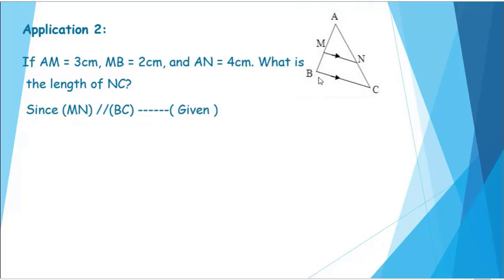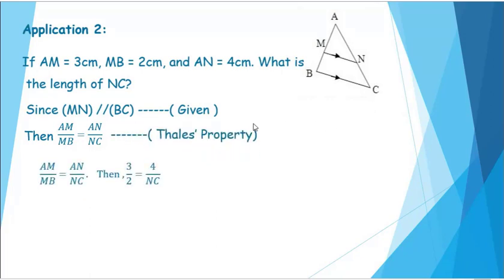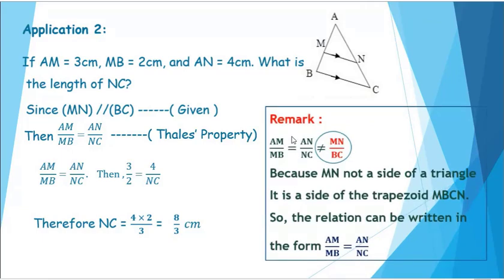Since MN is parallel to BC, given, then we can say that AM over MB equals AN over NC by the third property. By substitution, we get 3 over 2 equals 4 over NC. By cross multiplication, therefore NC equals 4 times 2 over 3, which equals 8 over 3 centimeters.